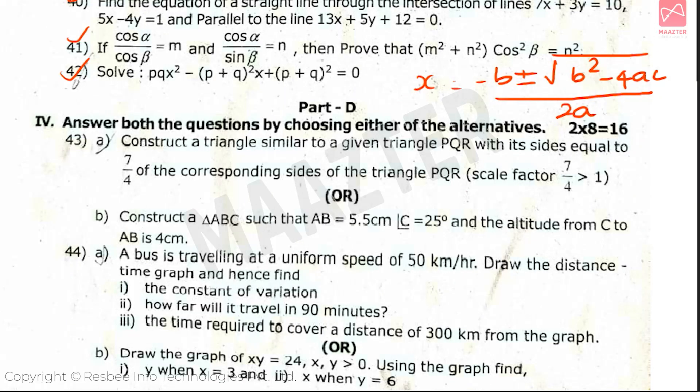Next, Part D, geometry and graph section. In this, total 2 questions are there. We have to answer 2 questions, and in each question there is A or B choice. Question number 43 is a geometry question and question number 44 is regarding graph.